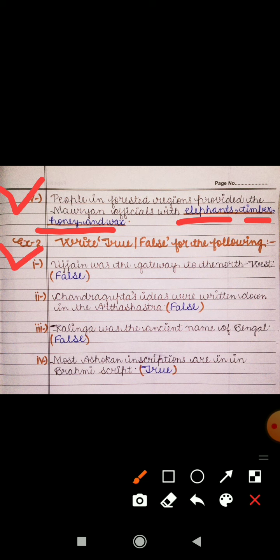Next is Exercise 2, True and False. First: 'Ujjain was the gateway to the northwest' — that is False, because Takshila was the gateway to the northwest. Second: 'Chandragupta's ideas were written in the Arthashastra' — also False, because the Arthashastra contains Chanakya's ideas, not Chandragupta's. Third: 'Kalinga was the ancient name of Bengal' — False, because Kalinga was the ancient name of Orissa. Fourth: 'Most Ashokan inscriptions are in Brahmi script' — that is True.